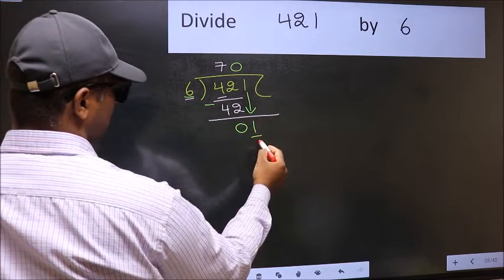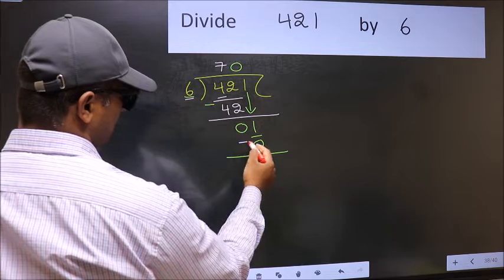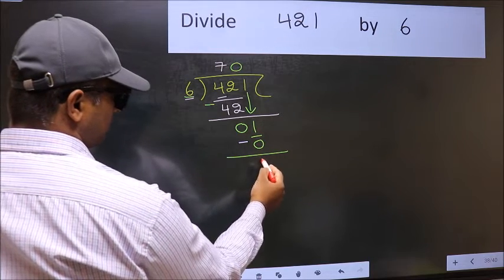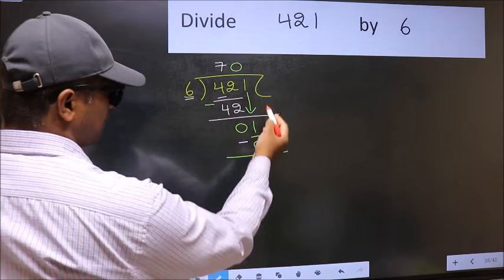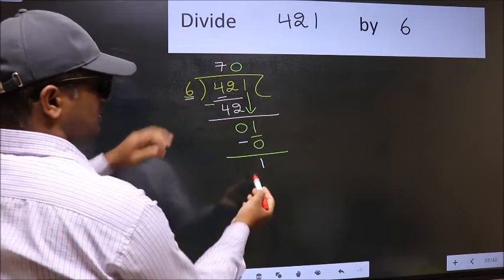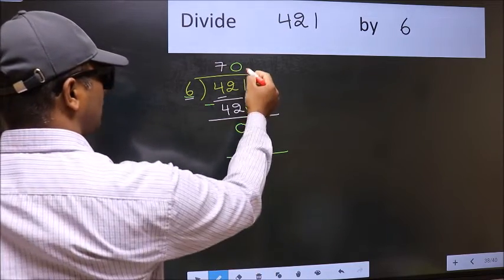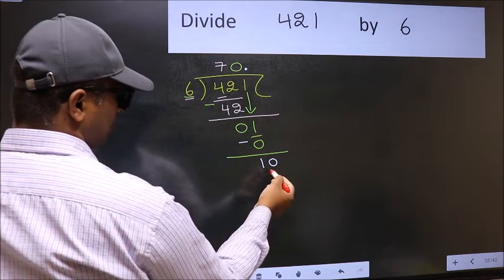So 6 into 0 is 0. Now you should subtract: 1 minus 0 equals 1. Over here we did not bring any number down, and 1 is smaller than 6, so now you can put dot and take zero. So 10.